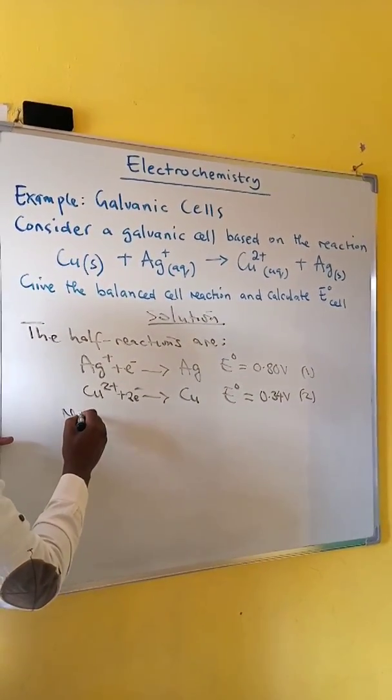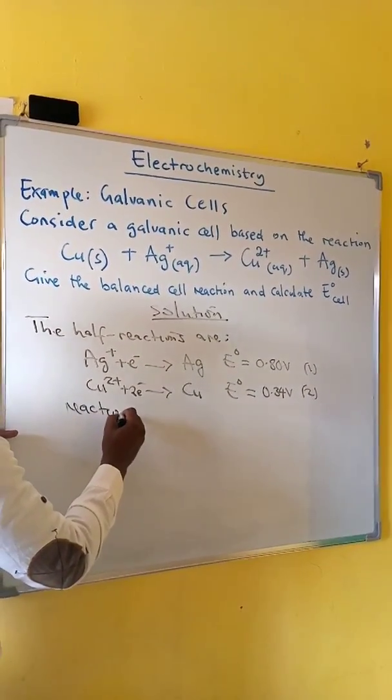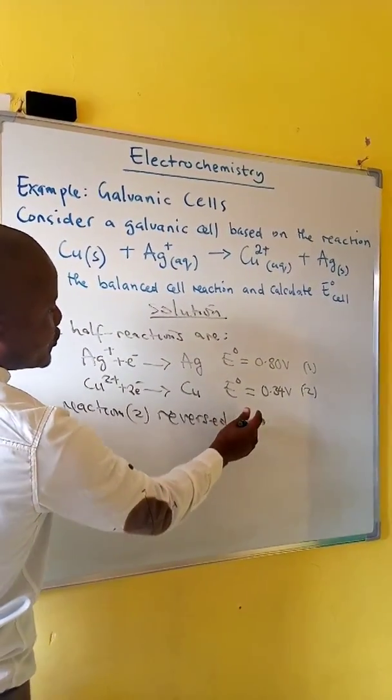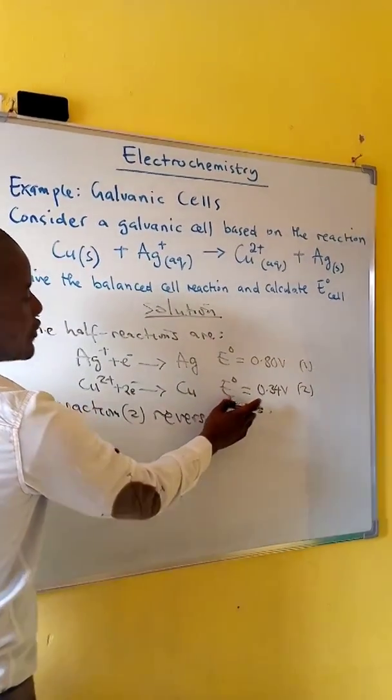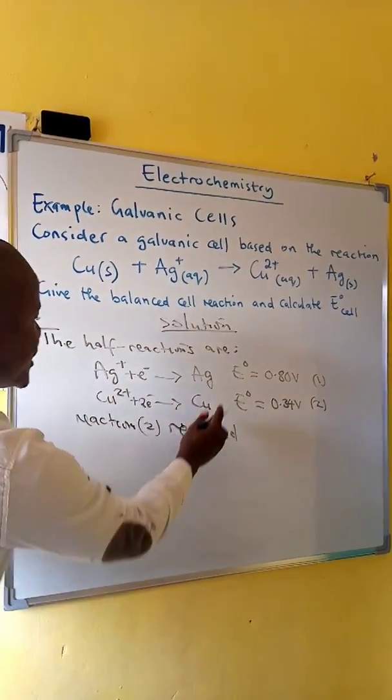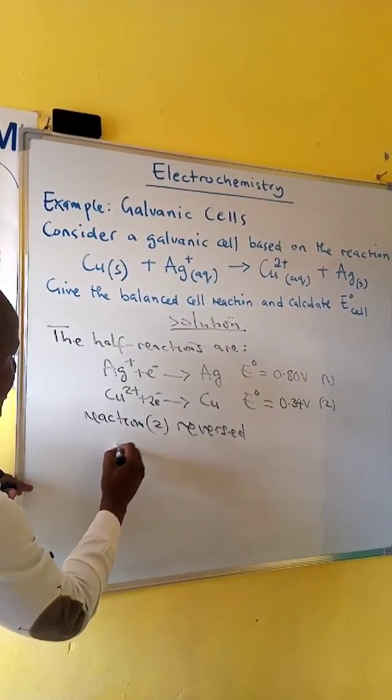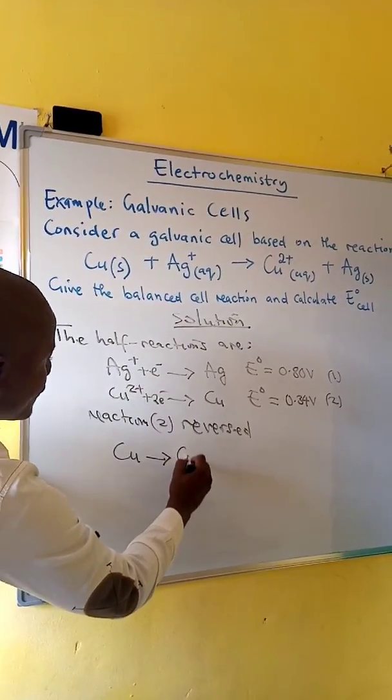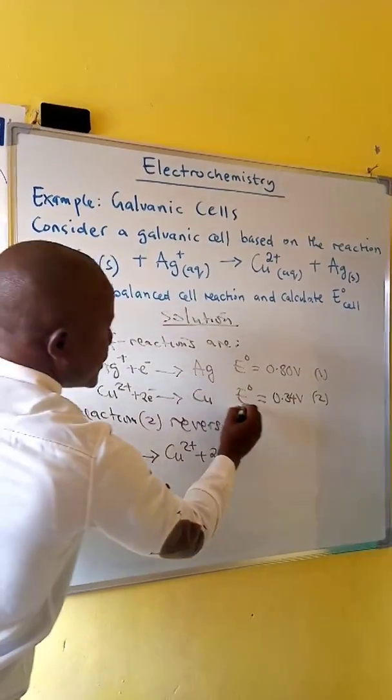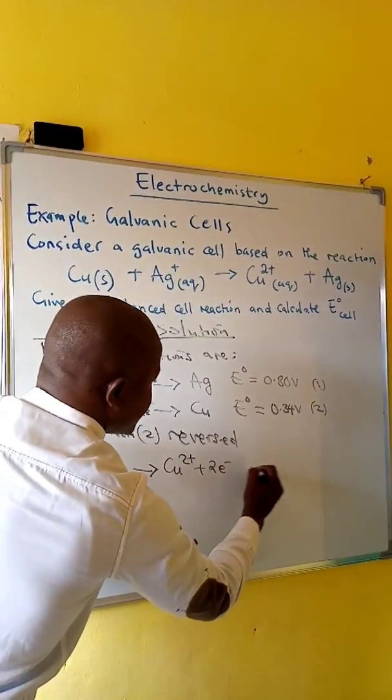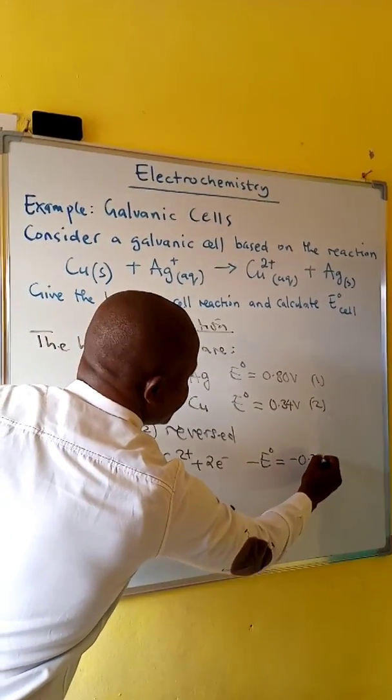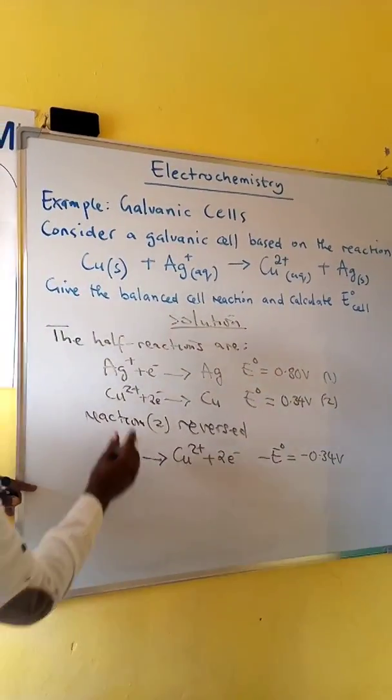So, reaction 2 must be reversed to run as an oxidation reaction because it has the lowest positive potential. This gives copper forms copper 2 plus 2 electrons. The potential is also reversed. We have negative 0.34 volts.